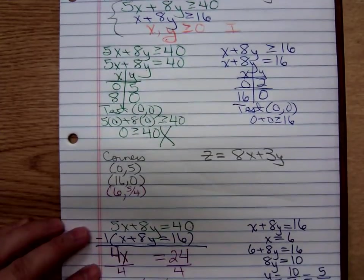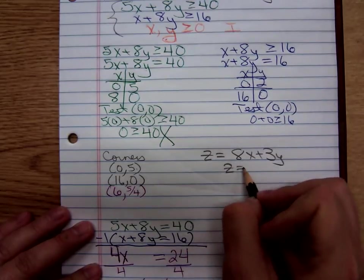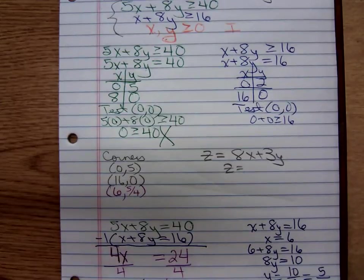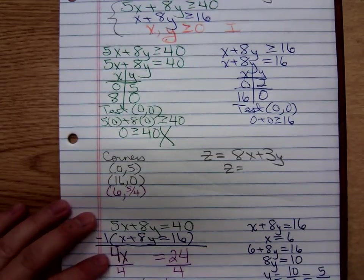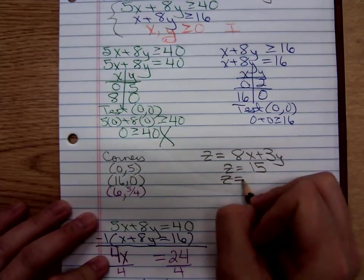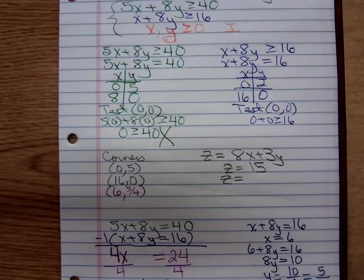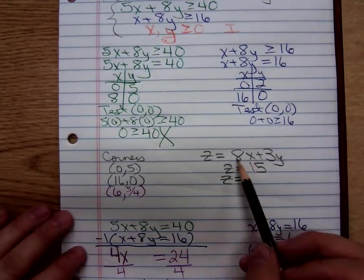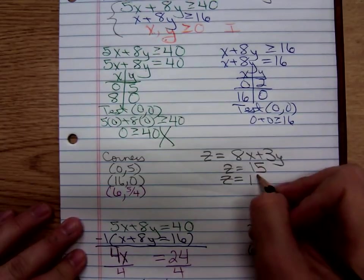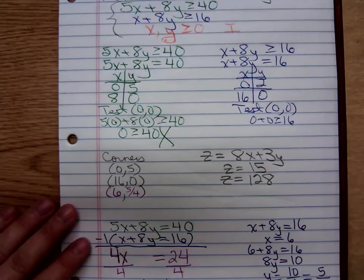So, plug in 0, 5. What are we going to get for z? That'd be 0 plus 15, which is 15. Plug in 16, 0. Is that 128, 8 times 16 plus 3 times 0? Someone check me there. I'm getting 128 in my mental arithmetic.